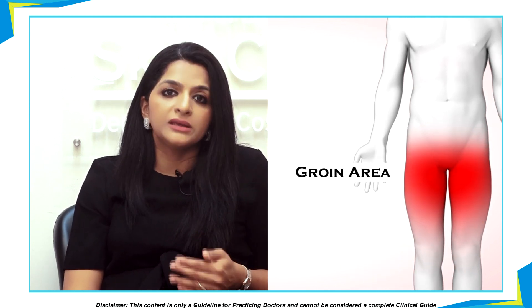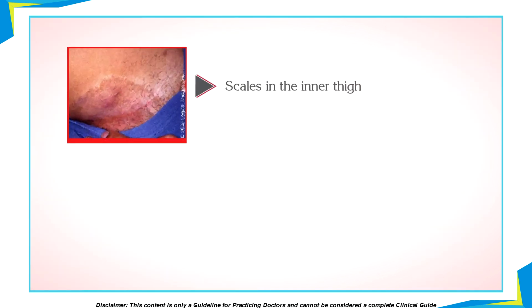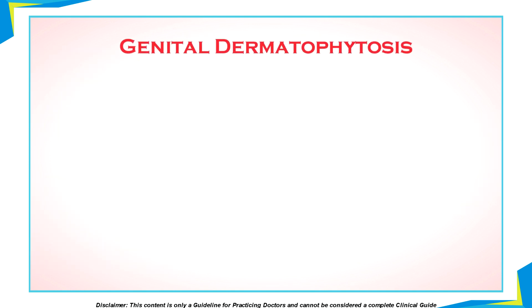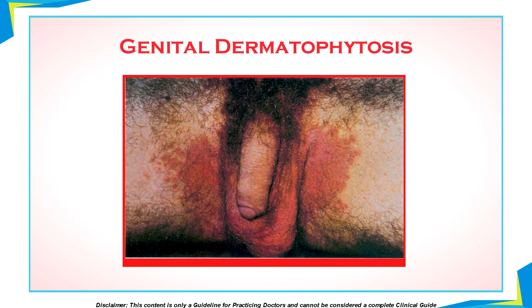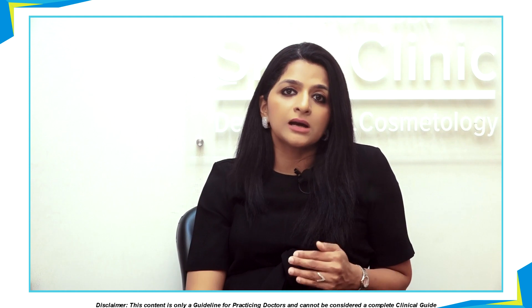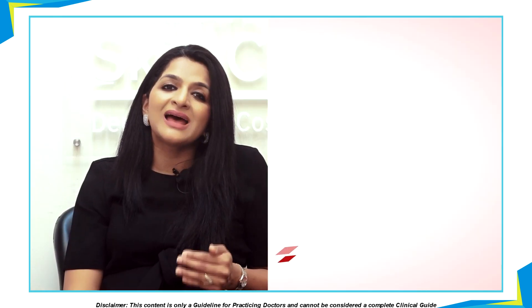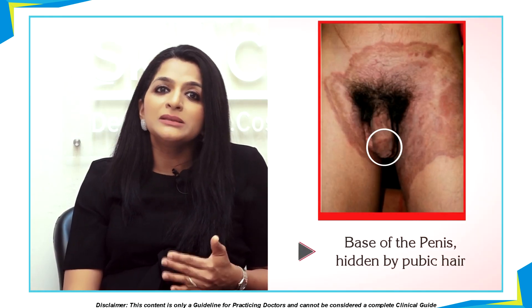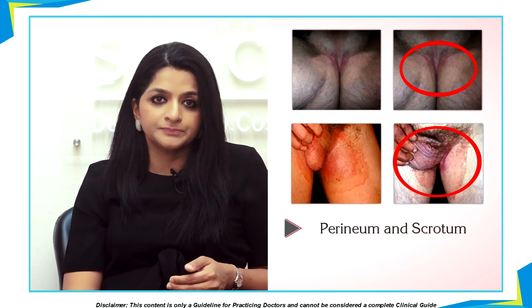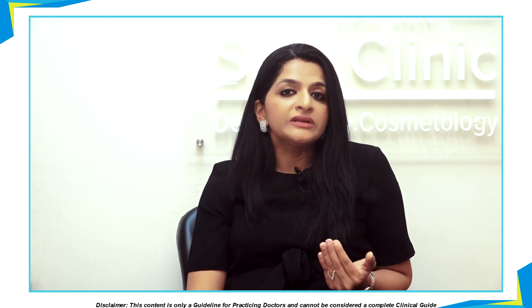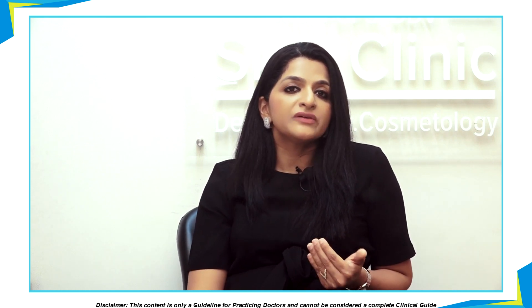Let us first start with the groin area. Whenever you see scales in the inner thigh with reddish lesions sparing especially the scrotal and the penile area, then your diagnosis is that of tinea cruris. Genital dermatophytosis is observed more commonly in males and occurs more commonly on the genital area, especially the penile area rather than the scrotal area. It is almost always accompanied by tinea cruris or tinea corporis. Often these patients will have lesions on the base of the penis that is hidden by the pubic hair, as well as on the perineum and scrotum. This makes it essential to examine the penile area by lifting the penis away from the scrotum, which too may be affected uncommonly.